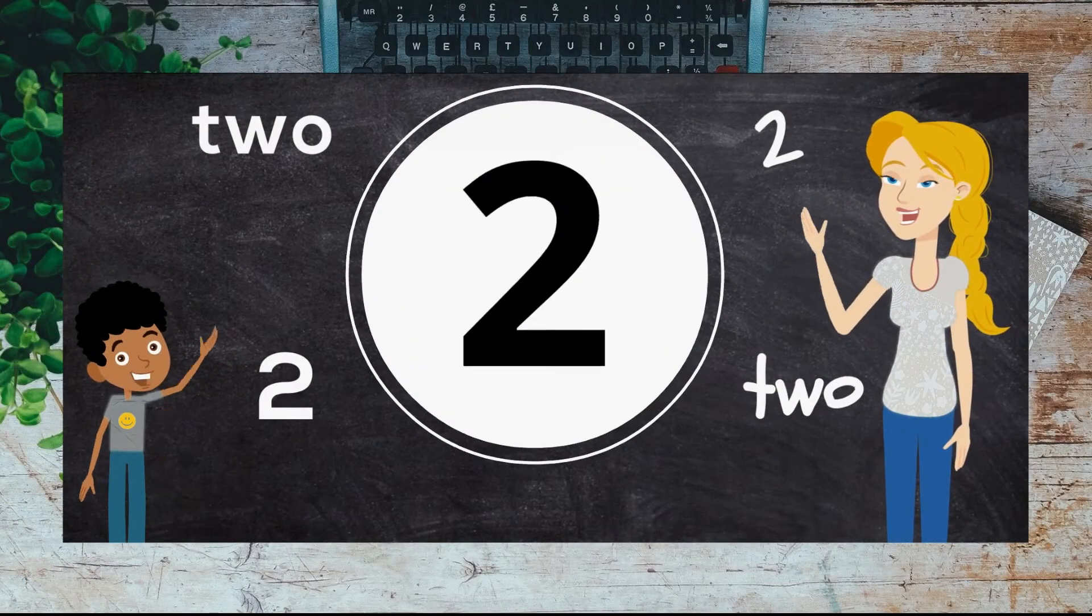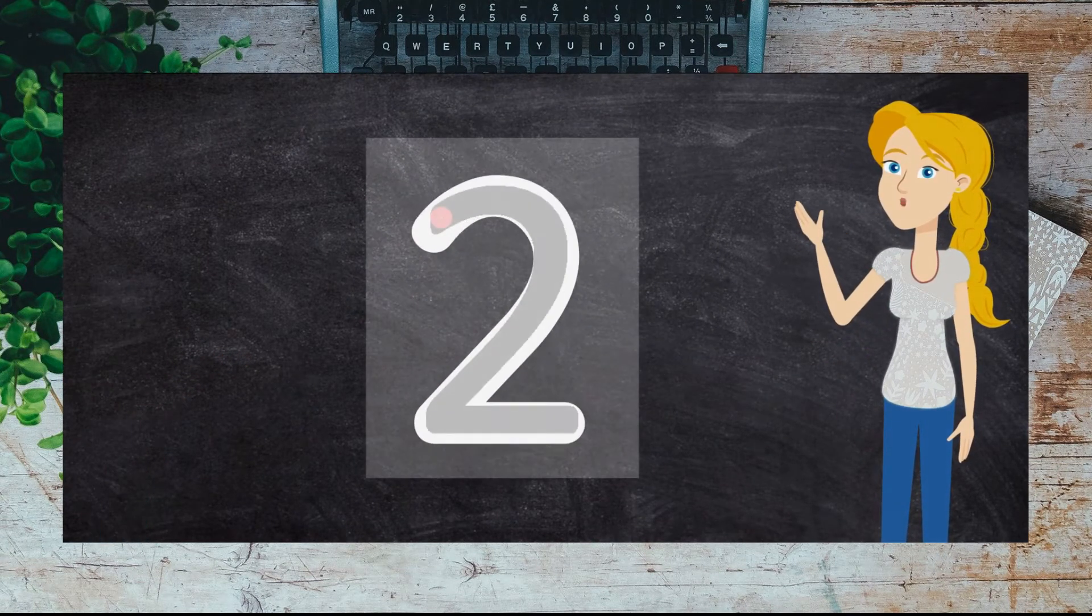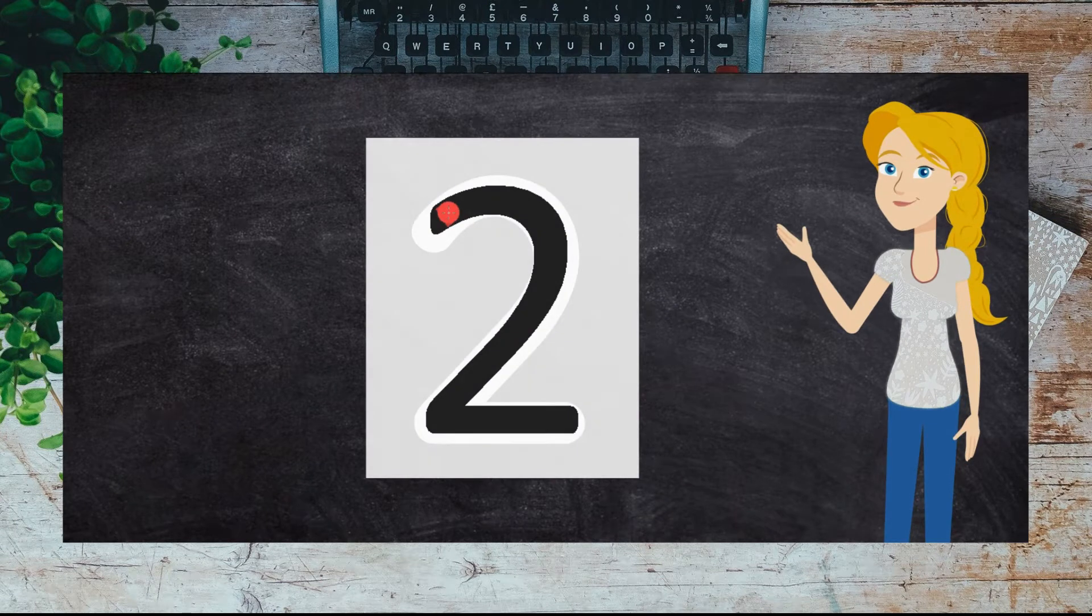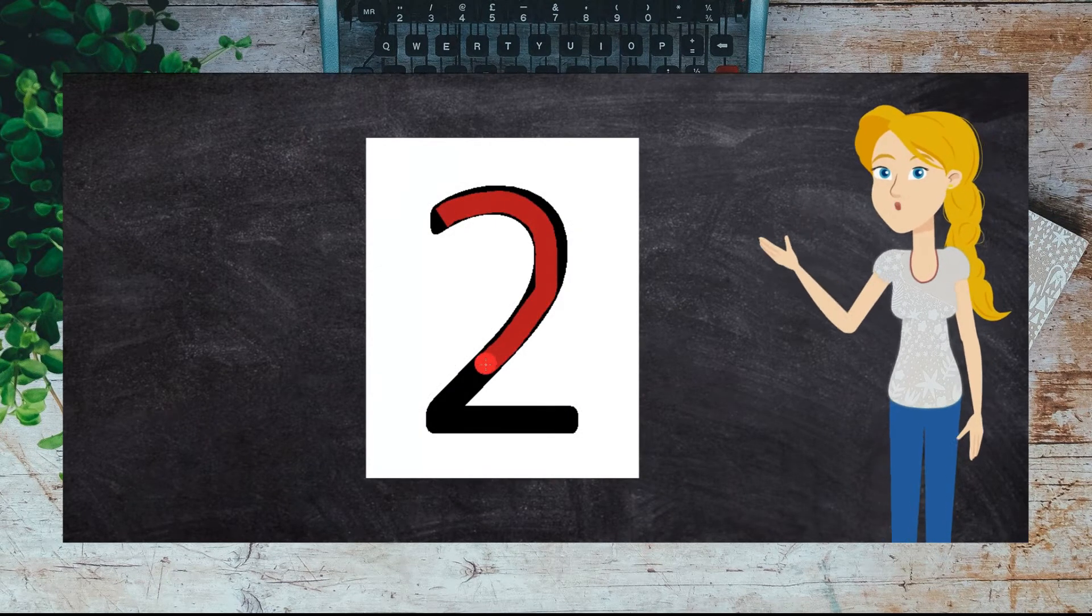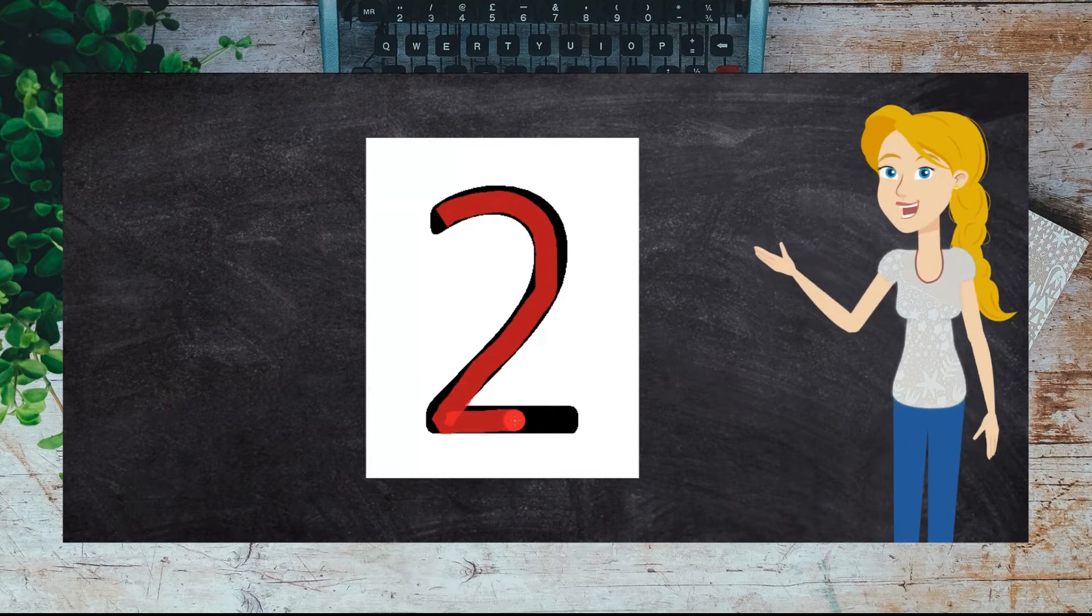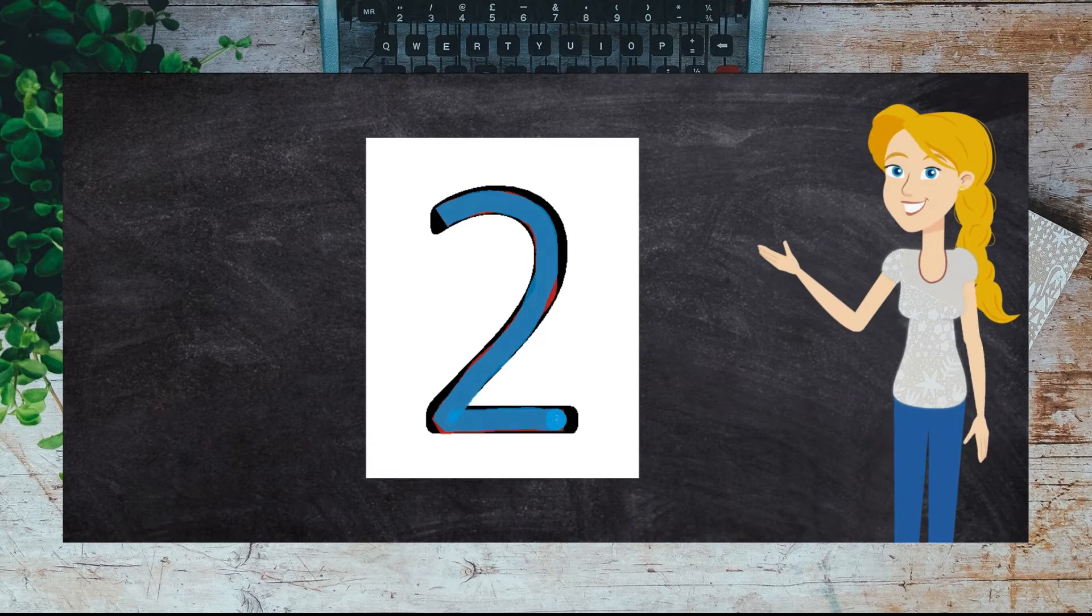Today we're going to learn all about the number two. When writing the number two, you start here and draw a curve around and down, then a line across, curve around and down, then a line across.